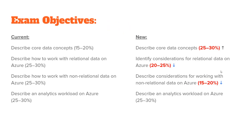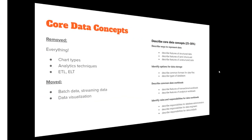First off, there's some changes around the percentages between each of the exam objectives. You can see on screen that on the left are the current four exam objectives and the breakdowns in terms of percentages. On the right are the new four objectives, and you can see the percentages have changed. The core data concepts has gone up from 15-20 to 25-30, so a 10% increase. The other two objectives, relational data and non-relational data, have actually dropped from 25-30 to 20-25 and 15-20. And finally, the analytics workload hasn't changed in terms of percentage.